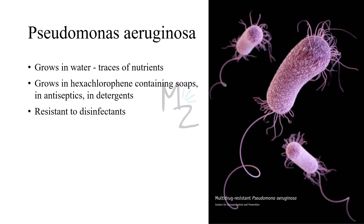Pseudomonas aeruginosa is able to grow in water that contains only traces of nutrients, like tap water, which favours its persistence in the hospital environment. It has a remarkable ability to withstand disinfectants, making it resistant and causing many hospital liquid infections. It has been found growing in hexachlorophene-containing soap solutions, antiseptics, and detergents.